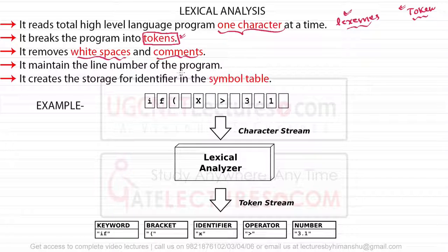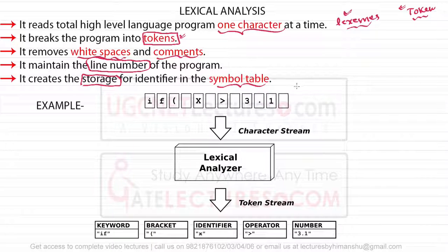The lexical analyzer maintains the line number of the program — this is important. It also creates storage for identifiers in the symbol table. Let me explain this with an example program containing a hash define statement: hash define N is 5, a main function, some comments, and statements like a equals a plus b.